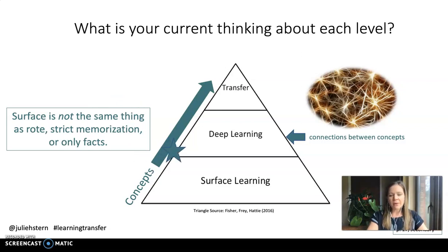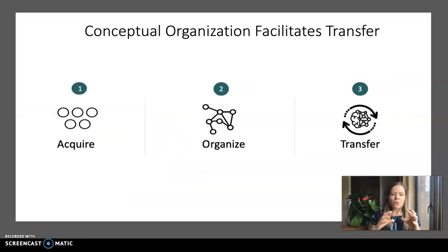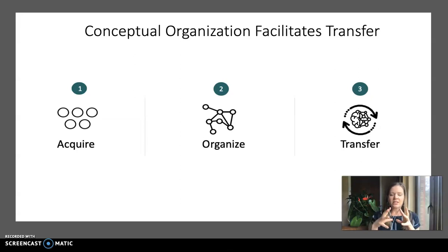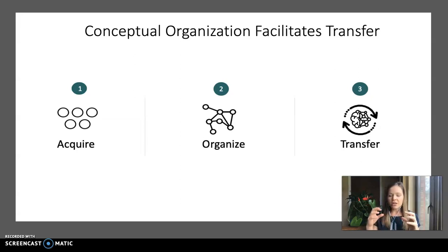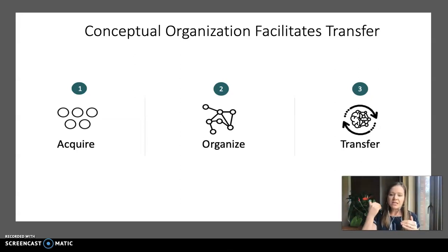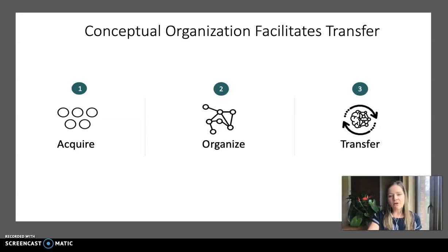Here's another visual my team and I created: students first acquire their understanding of individual concepts — that's surface level learning — and then when they start to organize that information into structures, that's deep learning. That organizational structure is what facilitates learning transfer, what facilitates students' ability to apply their learning to new and novel situations.